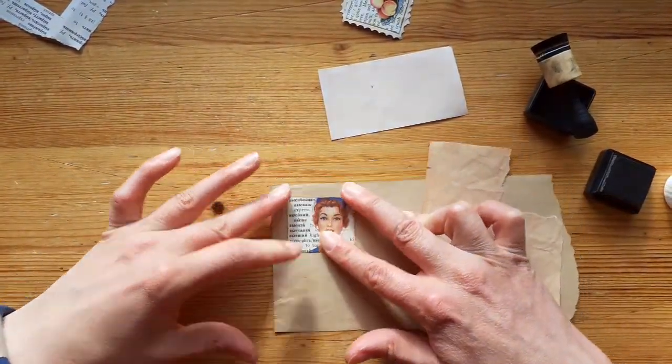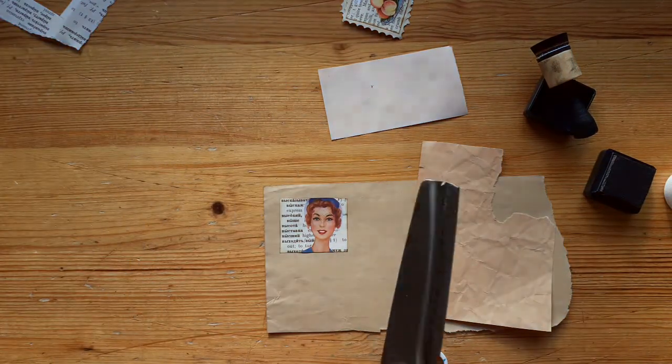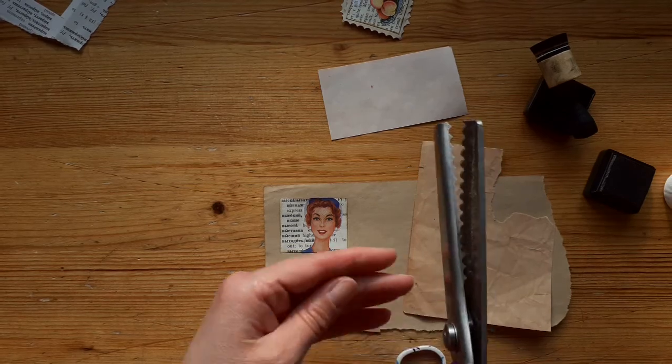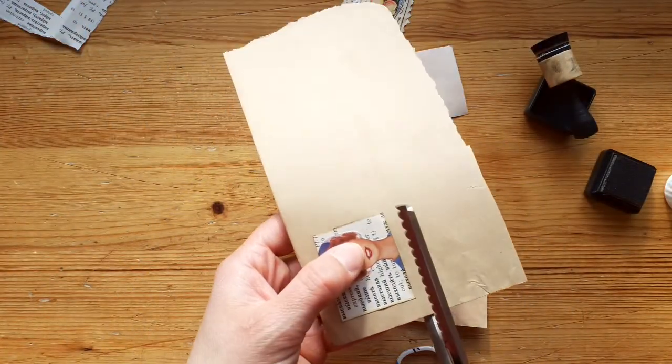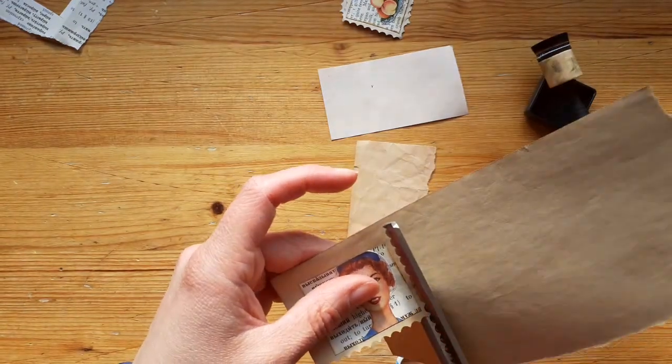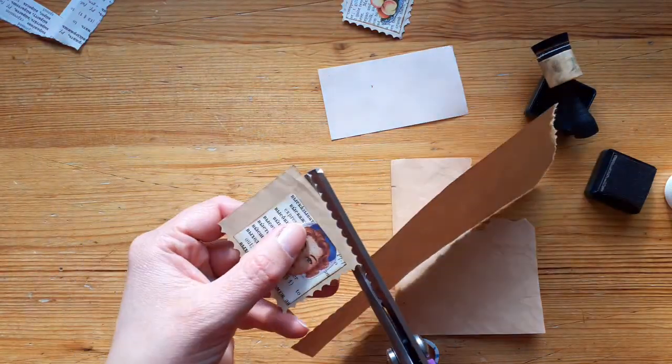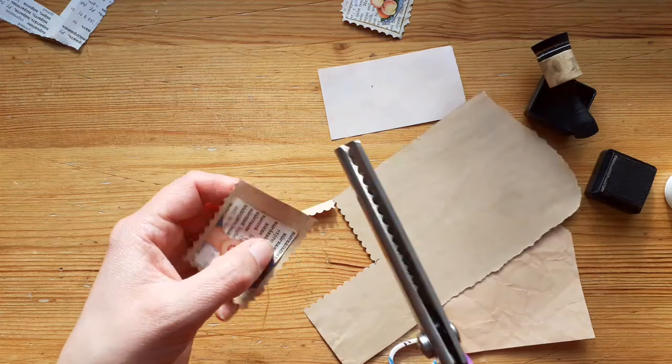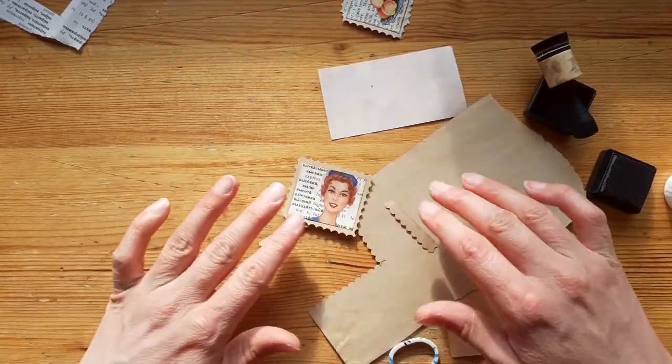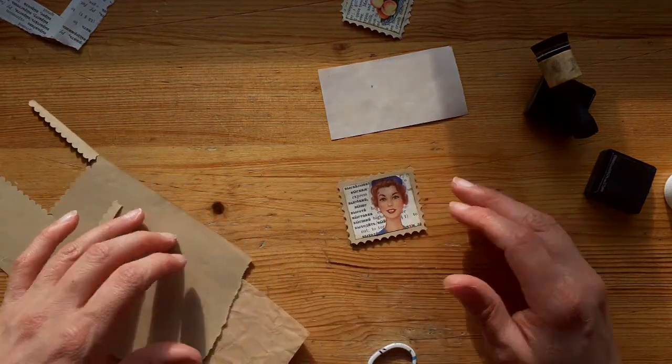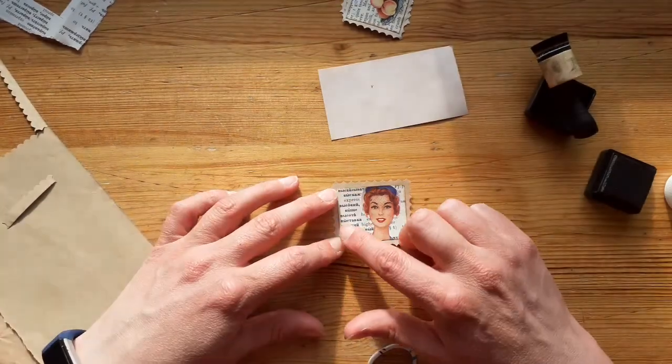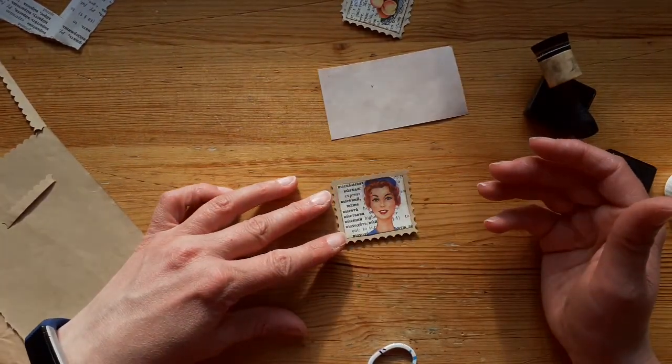Now in order to get the edges crimped, I've got these which are scalloped edged and I literally just turn them upside down like that to cut with them, and I just do one, two, three, four. Now obviously you can embellish these more, you can do a little bit of stencil work in the back. If you've got like number stamps, you can put first or second or whatever you like.